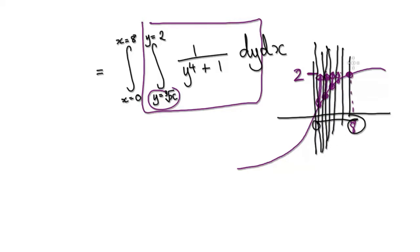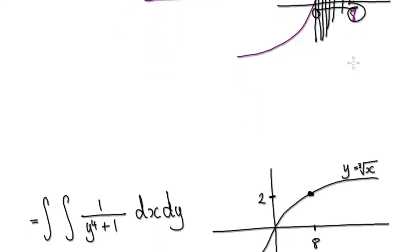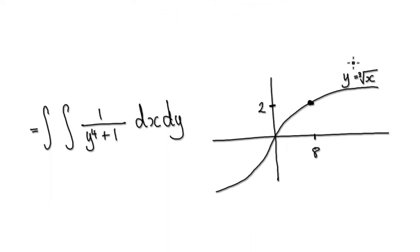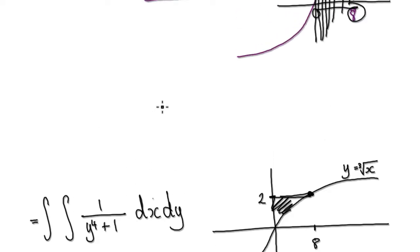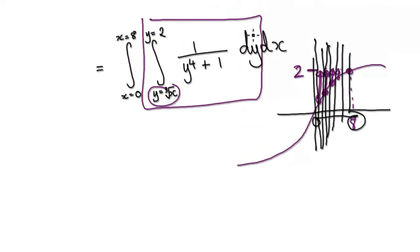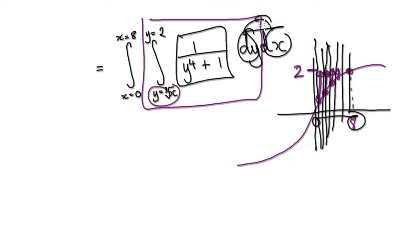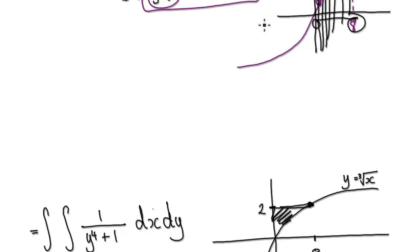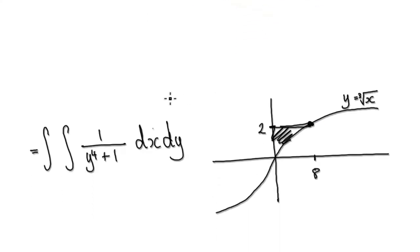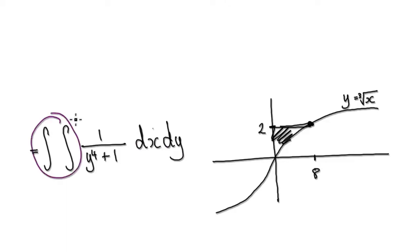So our region is this region here. We want to switch these two around because we want to treat this as a constant. So now it becomes dx then dy.